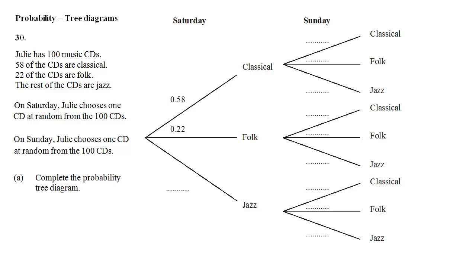Here we go with the probability questions. In the first one we've got Julie and she has 100 CDs: 58 classical, 22 folk and the rest are jazz. The rest is going to be important so let's work out just how many there are left. She's got 58 and 22, so the remainder from 100 is 20, so 20 jazz CDs.